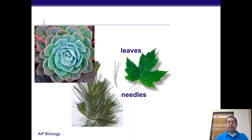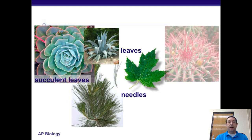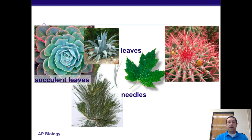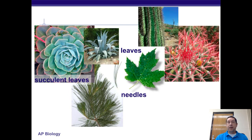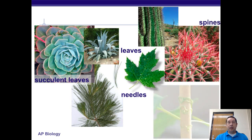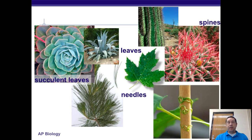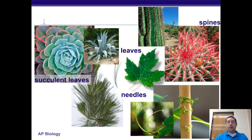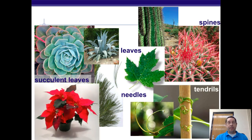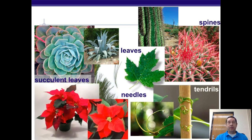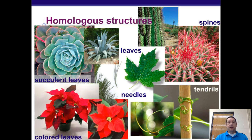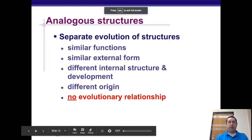Here you can see different kinds of leaves and how they've been adapted to different environments — succulents for desert environments, spines for protection, tendrils for growing up structures, and so on. These are all homologous structures.